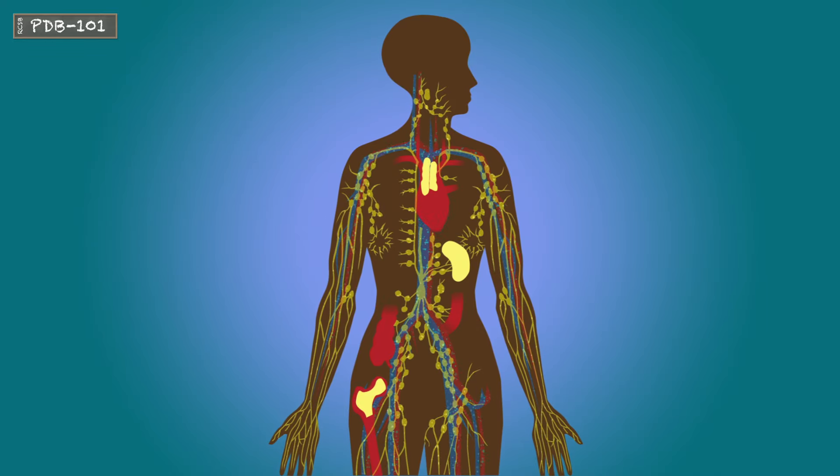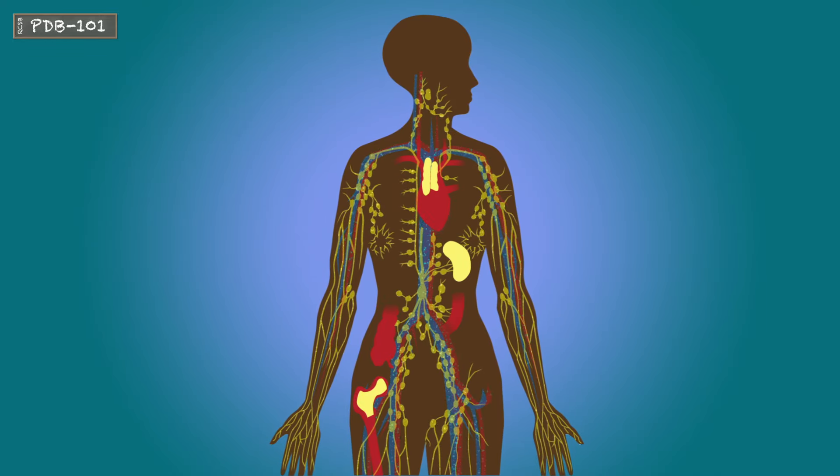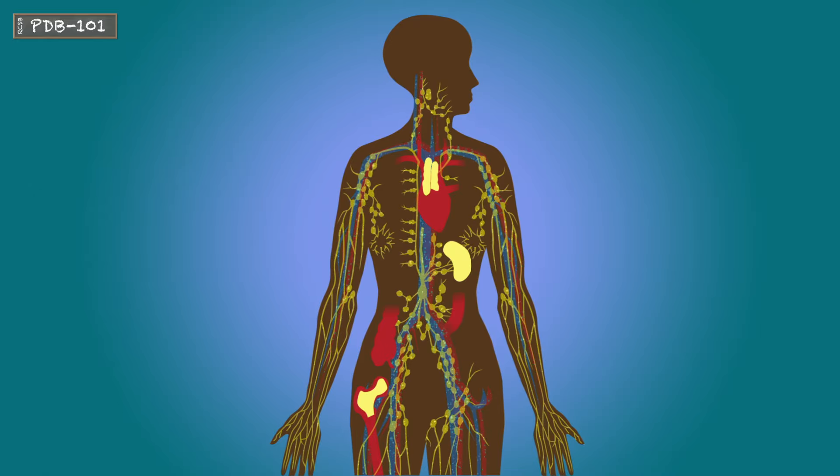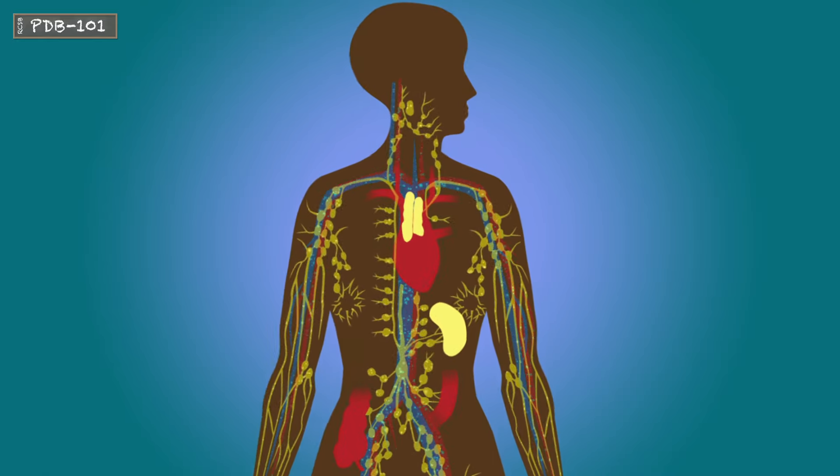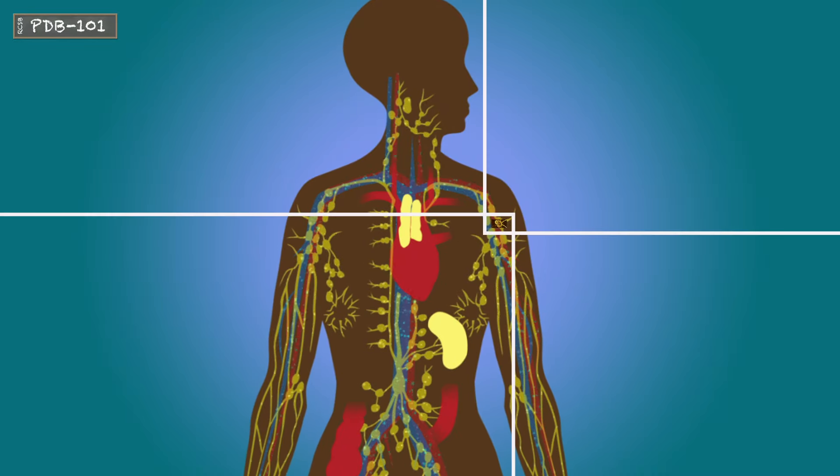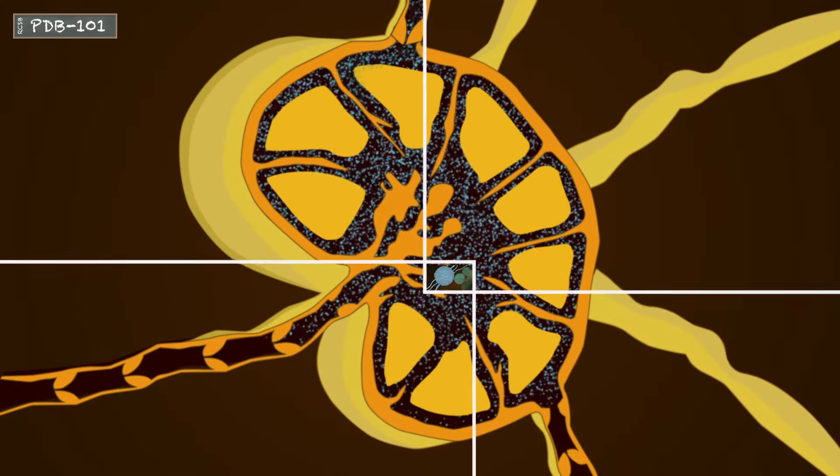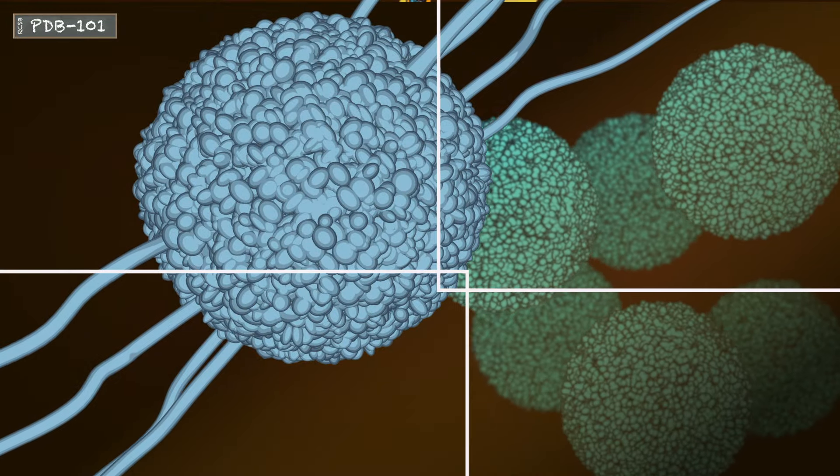Now the T cells are ready to exit the thymus and begin circulating between the lymphatic system and the bloodstream. Moving around increases the likelihood that a given T cell's TCR will encounter its target antigen. This is when the dendritic cells re-enter the scene.